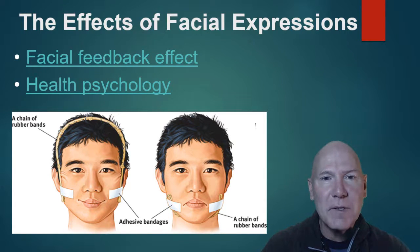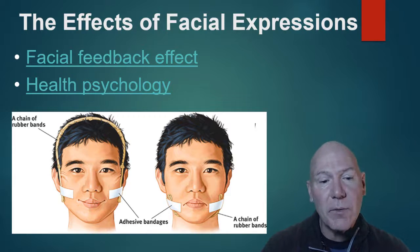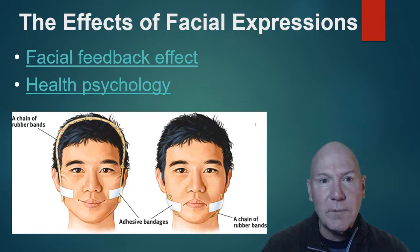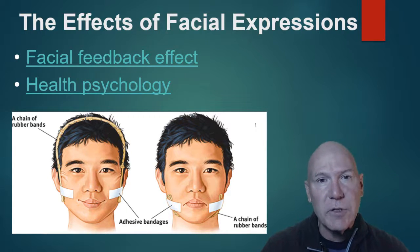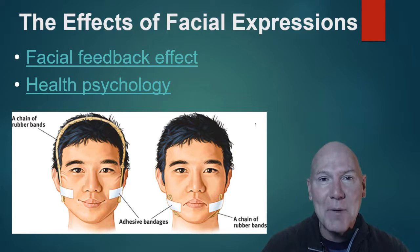The facial feedback effect: when rubber bands are taped across a person's head pulling their face into a feigned smile, it actually puts them in a better mood and they rate jokes as funnier. The opposite is true when faking a frown. So you can 'fake it till you make it' — if you fake a smile right now, you'll probably notice it has a positive emotional effect on you. It's much better to feign the happy expression — that's the facial feedback effect.